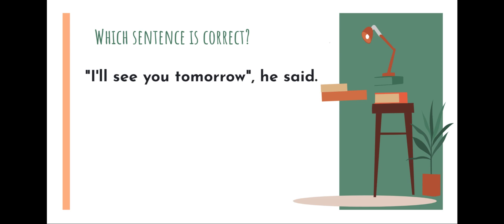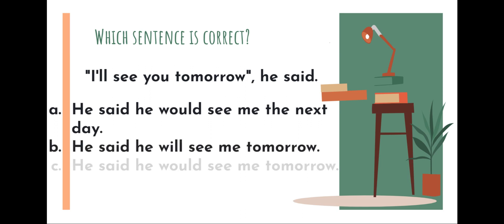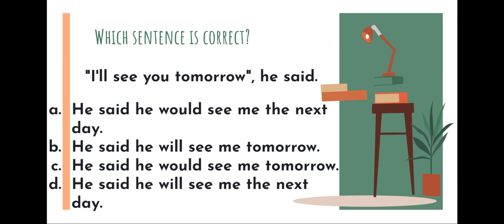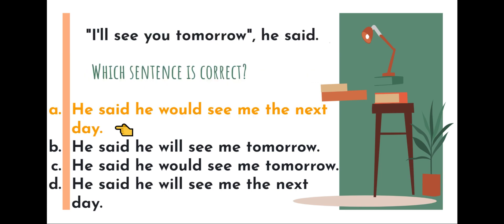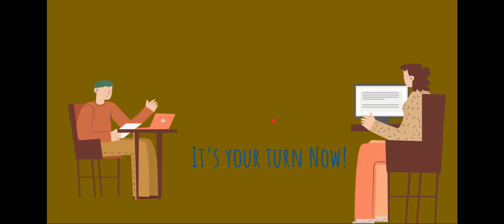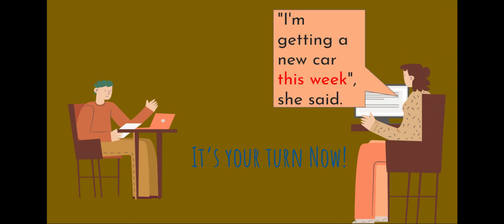Let's do one or two practice exercises before you go to your worksheet. Which sentence should be the correct reported speech? 'I will see you tomorrow,' he said. This is the direct statement. When we turn this sentence into reported speech — A, B, C, or D — which one is correct? The correct one should be A: 'He said he would see me the next day.' Pronouns change from 'I' to 'he,' tense changes from future to past — 'will' to 'would' — and 'tomorrow' changes to 'the next day.'